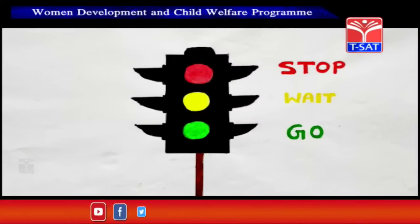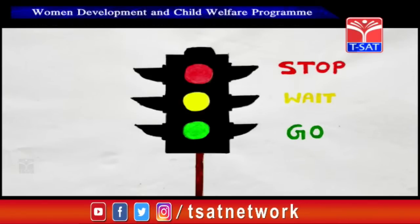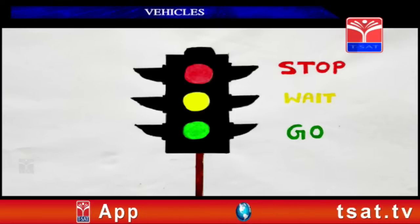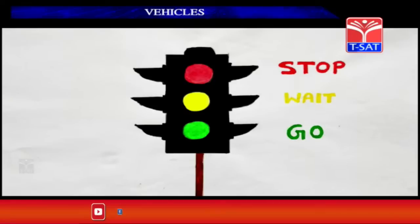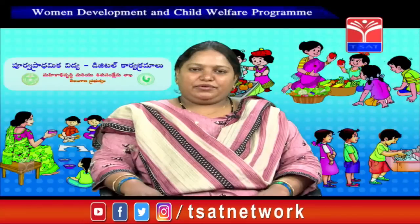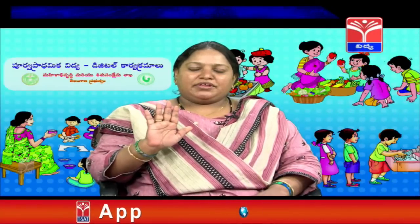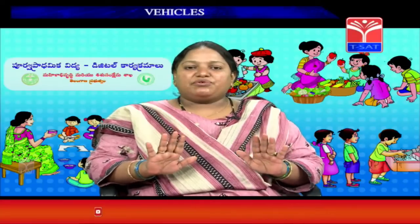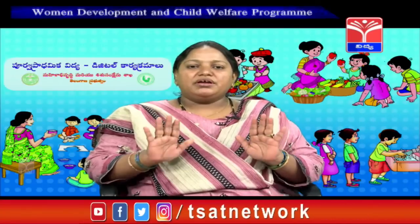What colors are there in the traffic light? Red, yellow, and green. Each color has a meaning. Red light means you have to stop your vehicle. Yellow light means you have to wait for your turn.